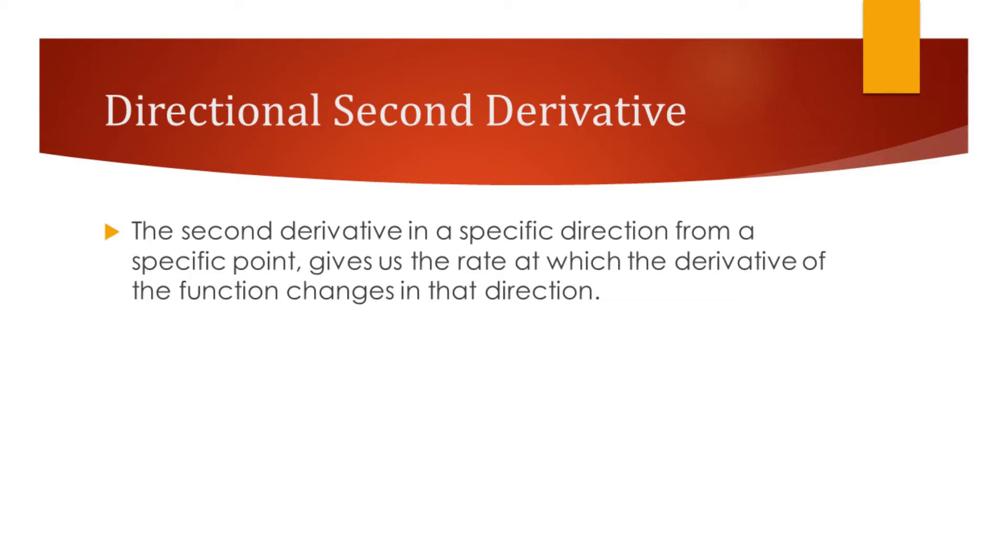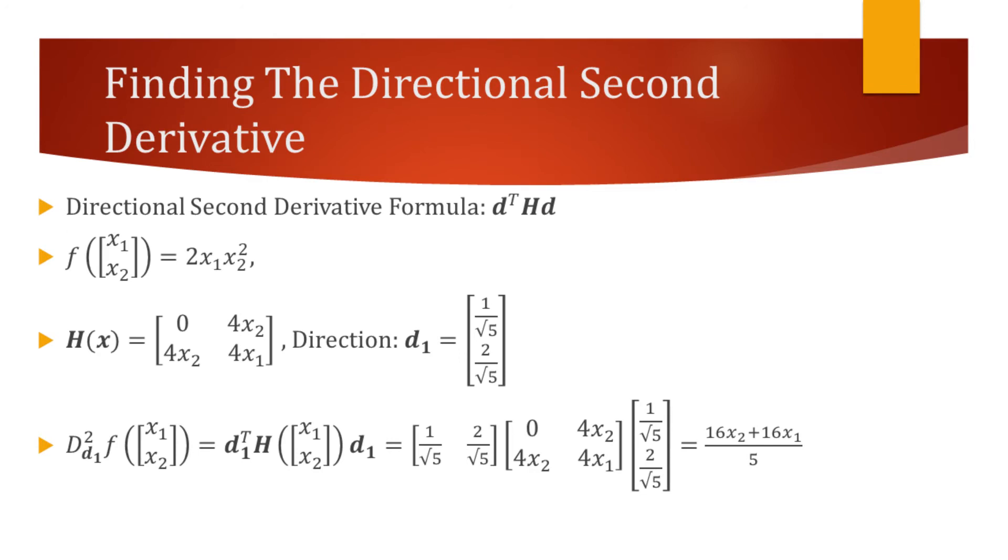We will now see a very simple way of finding the directional second derivative using a Hessian matrix. When we have a Hessian matrix of a function, finding the directional second derivative is relatively easy. We can use the formula on the top of the slide.